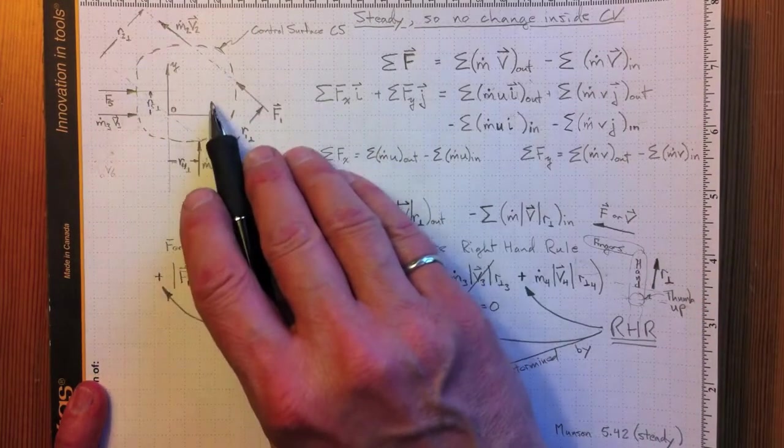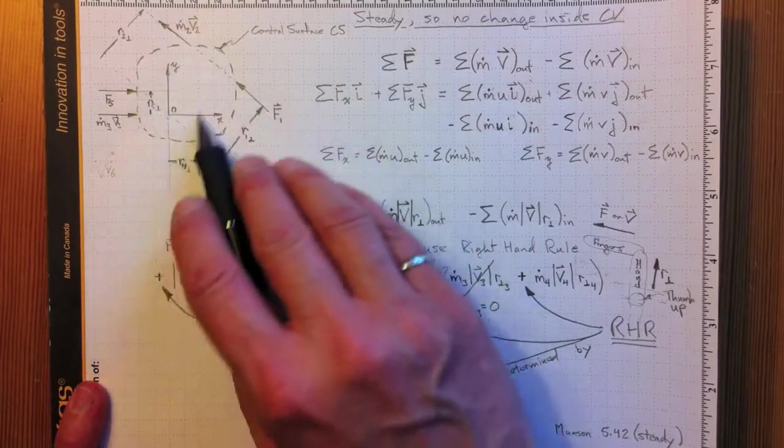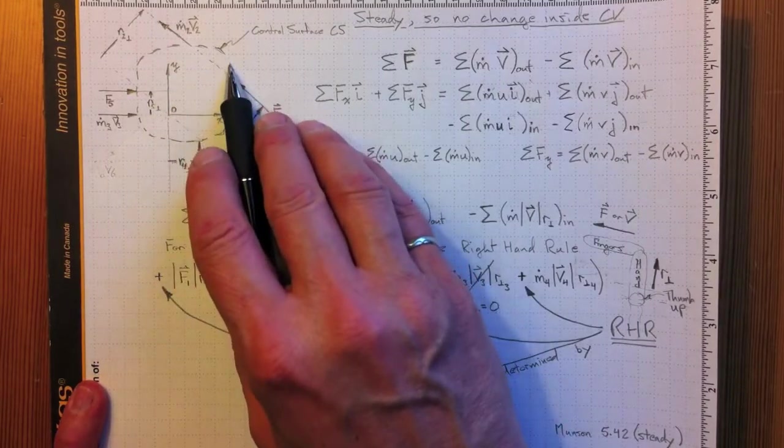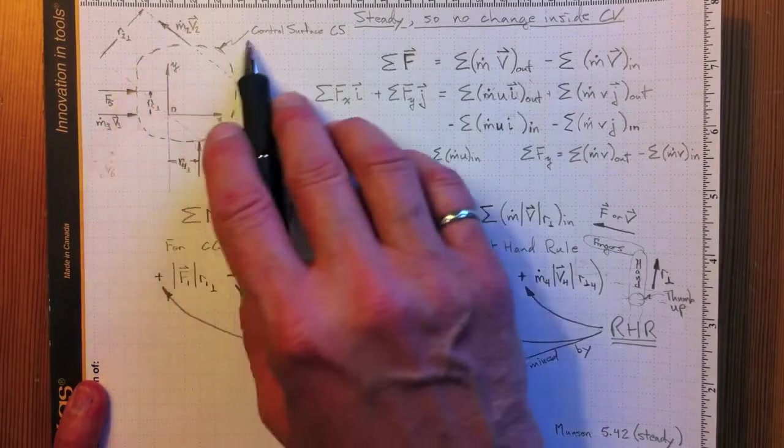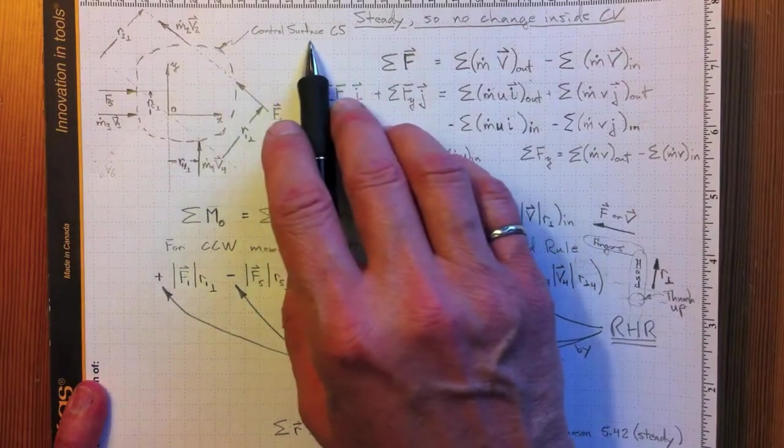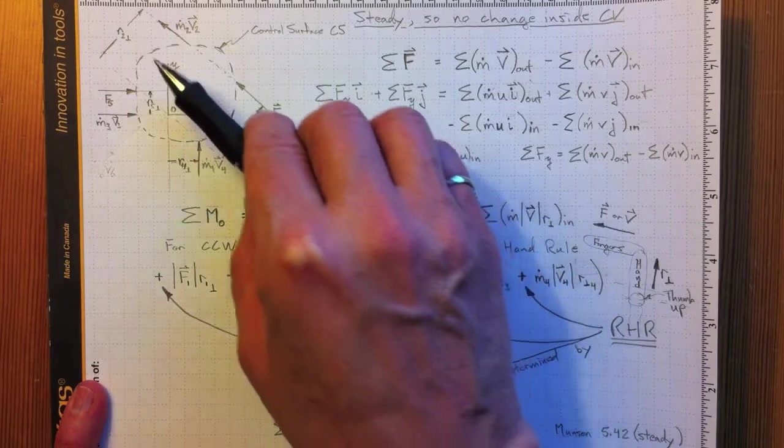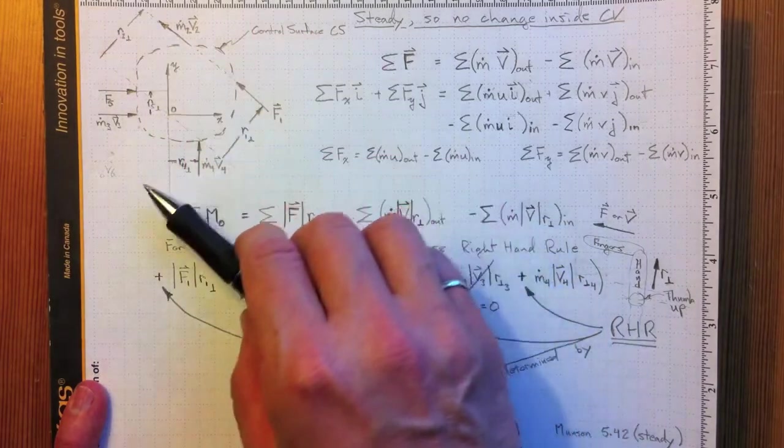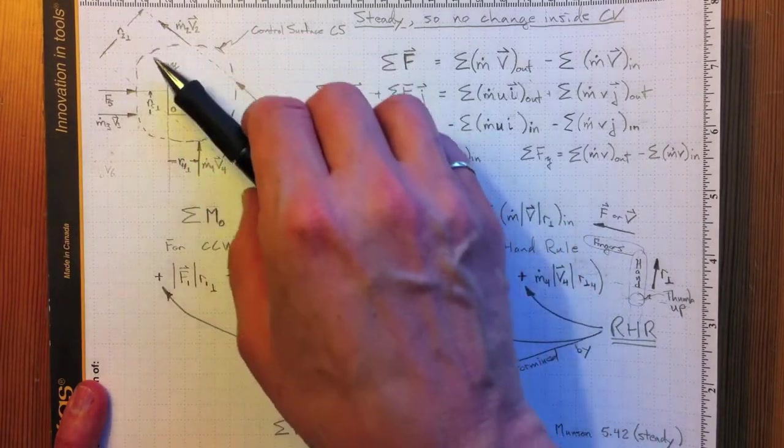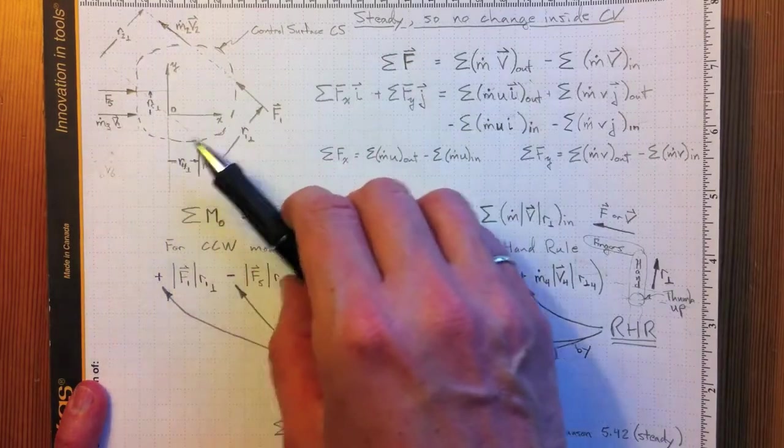It covers the same physics. If we've got a control volume like this, defined by this outer surface, this dotted line is the control surface, the outer boundary of the control volume, then the difference between stuff coming in and stuff going out has to be balanced. The momentum coming in and the momentum going out has to be balanced by applied forces.